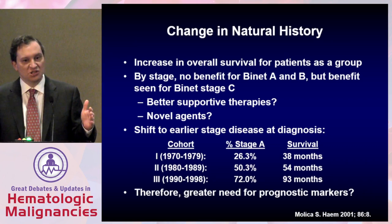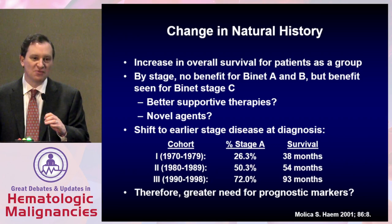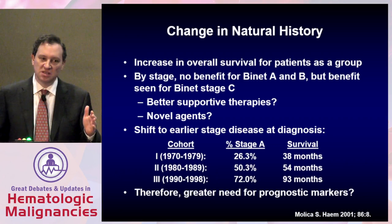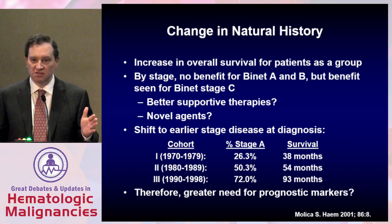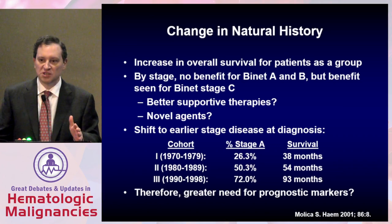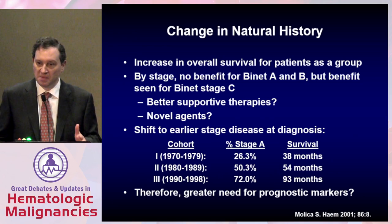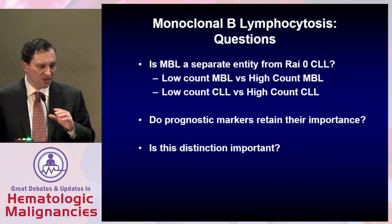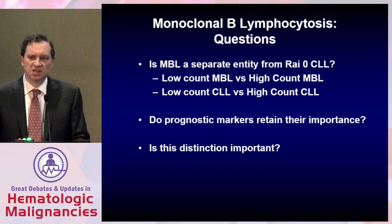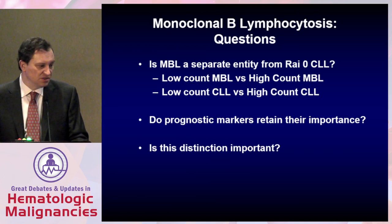Now imagine we go a step further and start identifying these patients long before they have CLL. When you look at the change in criteria for the 2008/2011 IW-CLL update — when the definition of CLL was changed from 5,000 lymphocytes in the peripheral blood to 5,000 B cells in the blood — actually 40% of patients who were previously diagnosed as Rai stage 0 were reclassified as MBL. This is going to really shift our curves to the left. The important questions are whether MBL really is a separate entity and whether this distinction is important.